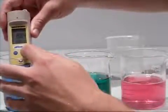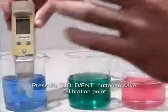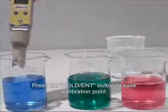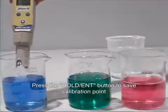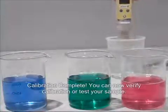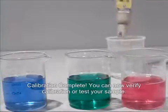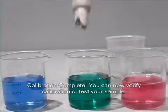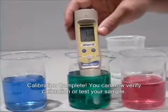Press the hold enter key to confirm the final calibration point. The tester will then return to measurement mode. At this point, you can rinse the tester and confirm the calibration by placing in any of the pH buffers or take a reading of your sample.